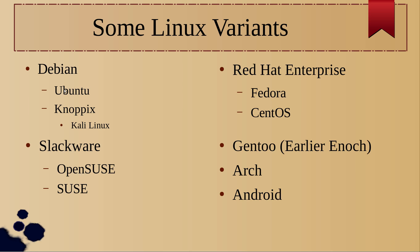Ubuntu is a Linux distribution but it's derived from Debian. Similarly, Kali Linux is derived from an operating system called KnoppX, which was derived from Debian. There are a few other families like this.